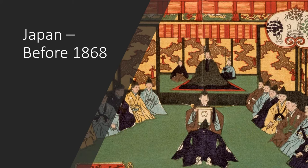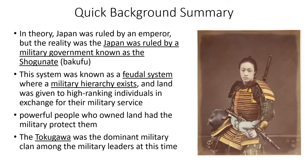To understand why this expansion happened, we have to understand Japan before 1868. In theory, Japan was ruled by an emperor, but in reality it was ruled by a military government known as the shogunate. This was a feudal system where military hierarchy existed and land was given to high-ranking individuals in exchange for military service. The most powerful clan at this time was the Tokugawa clan — they were dominant among all the military leaders in Japan, with multiple clans controlling their own regions.